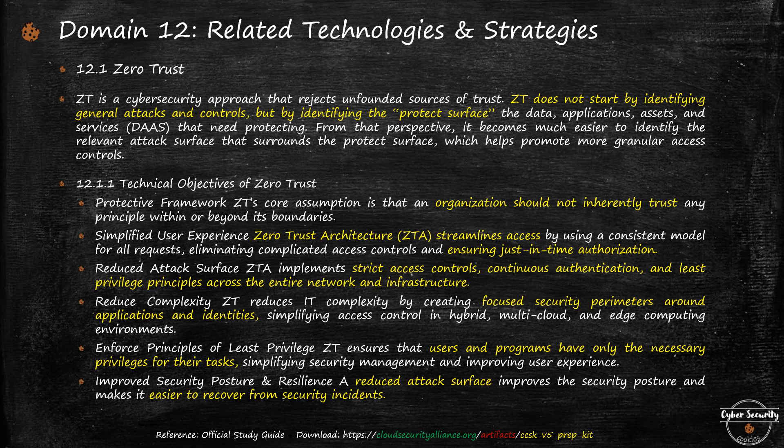Zero Trust architecture is about streamlining access. You can think about just-in-time access or just-in-time authorization — you've done authentication and authorization and then you move forward. You need strict access controls, continuous authentication — remember the term continuous authentication — you have to re-authenticate and implement the least privilege principle across your network and infrastructure. It focuses on the perimeter around application and identity, and you don't trust by default. Users, systems, and programs will only have the necessary access to perform their tasks.